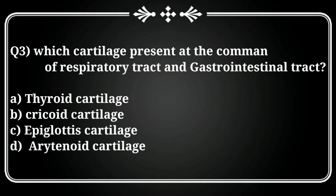Question 3: Which cartilage is present at the common junction of the respiratory tract and gastrointestinal tract? The correct answer is option C, Laryngopharynx. At this junction, it opens during eating for the gastrointestinal tract and during breathing for the respiratory tract.